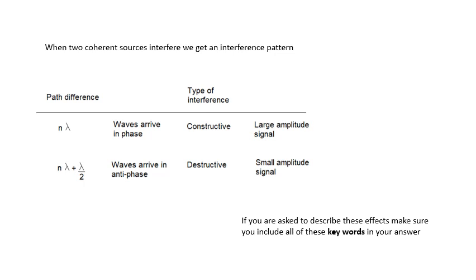It's very likely you might get a question worth loads of marks: explain what's happening here. The person marking it is looking for key words. When two coherent sources interfere, what are the three conditions for coherence? If the path difference is n lambda, they arrive in phase — constructive interference, large amplitude signal. If the path difference is n lambda plus lambda over 2, the waves arrive in antiphase — destructive interference, small amplitude signal.